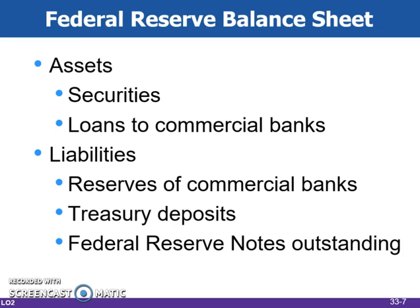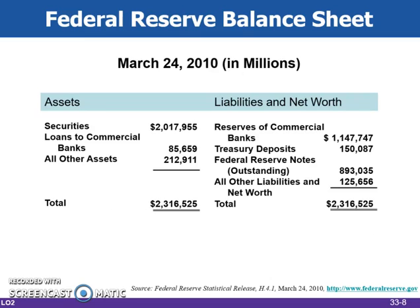Just like any other organization, the Federal Reserve Bank's balance sheet reports the assets and liabilities of the organization as of that point in time. The Fed's balance sheet helps us to consider how the Fed conducts monetary policy. The two main assets of the Federal Reserve Banks are securities and loans to commercial banks. The securities are government bonds that have been purchased by the Federal Reserve Bank to increase the supply of money in the economy. Loans to commercial banks also help the banks to increase their reserves.